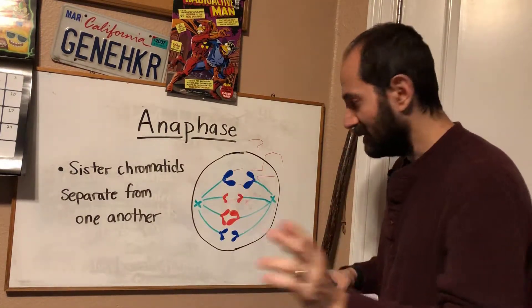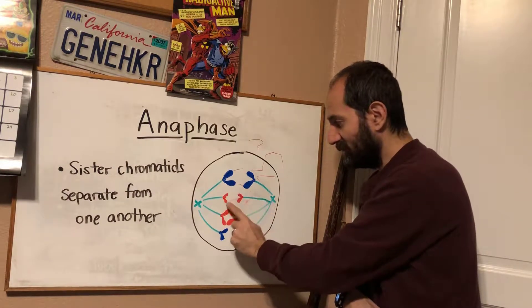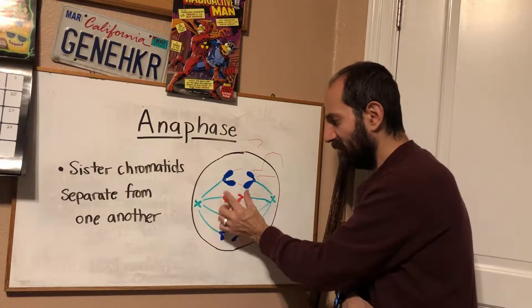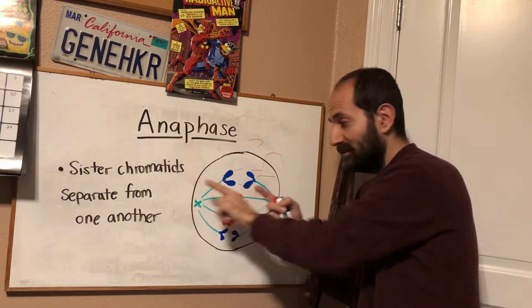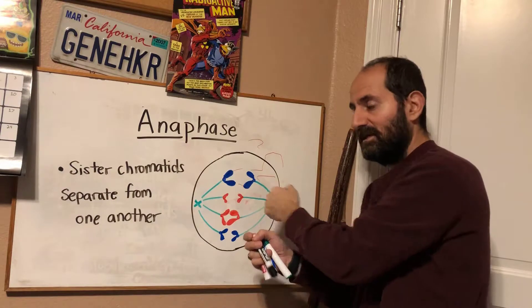And what you need to understand is that, remember, this sister is the same information as that sister. These pairs are all the same information. So the same information is headed to this new daughter cell as is headed to this new daughter cell.